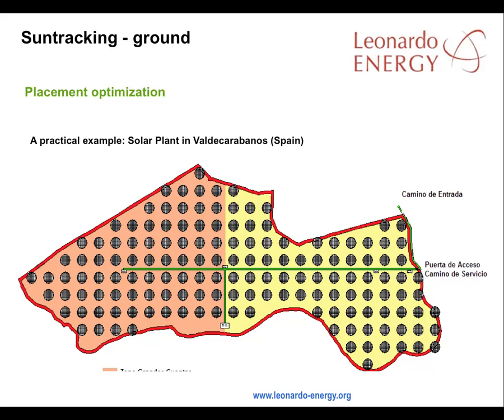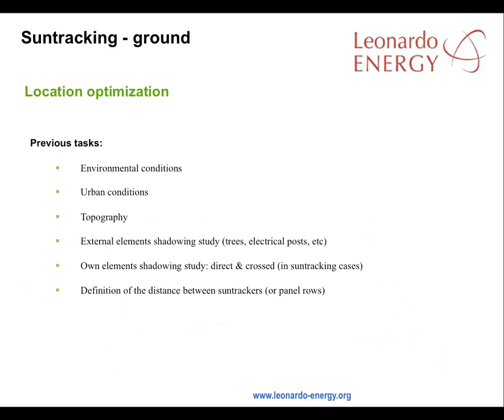Over the next slides, we will refer to a solar plant built at Val de Carabanos, south of Madrid in Spain. Prior to settling on a location, a series of investigations had to be made into the environmental and urban conditions, including air pollution levels. The topography has to be studied, taking account of shadowing issues and the area that will be needed for panel rows, whether fixed or sun tracking systems are used.